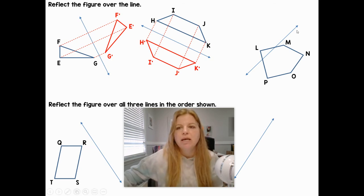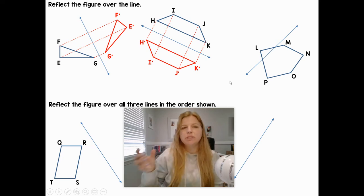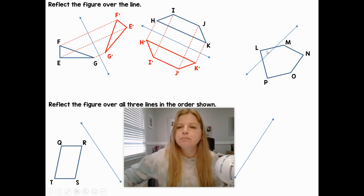Now this third example, notice the figure actually crosses over the reflection line already. What's going to be interesting here is that the reflection is actually going to be part of an overlap. If I reflect L over this reflection line, it's actually inside of the original figure. That's where L prime would be.